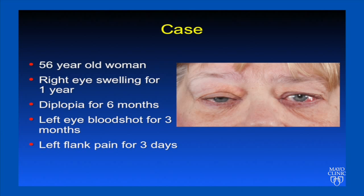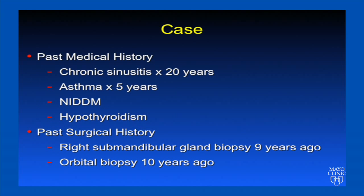We'll start with the case: a 56-year-old woman who presented with right eye swelling for one year, diplopia for six months, her left eye had been bloodshot for three months, and she had a three-day history of left flank pain. Her past medical history was significant for chronic sinusitis for 20 years, asthma for five years, non-insulin-dependent diabetes mellitus, and controlled hypothyroidism.